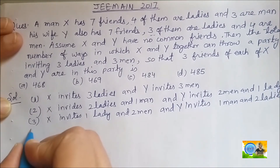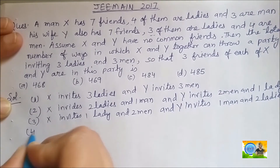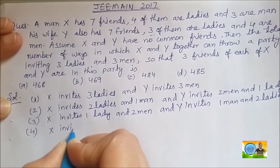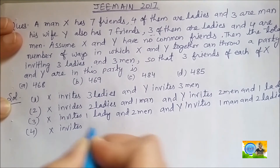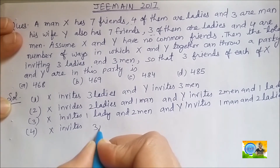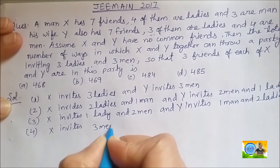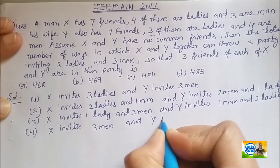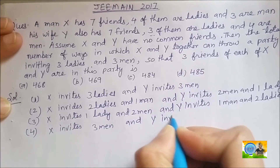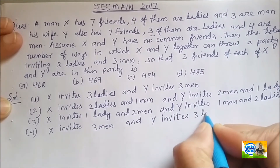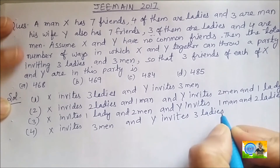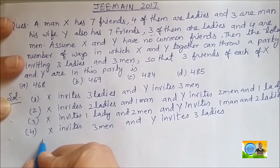Fourth case: X invites 3 men and Y invites 3 ladies. So now let us calculate the total number of ways for all these cases.